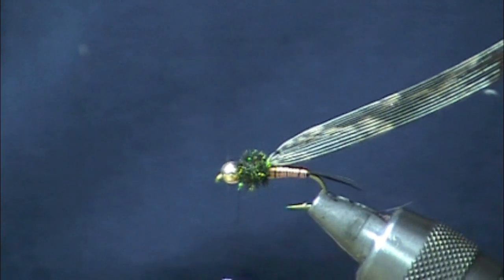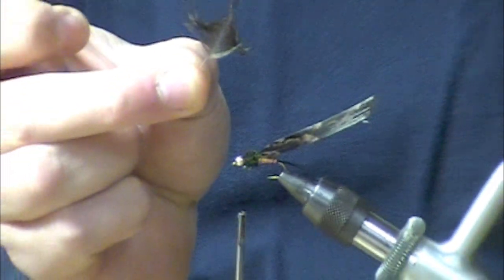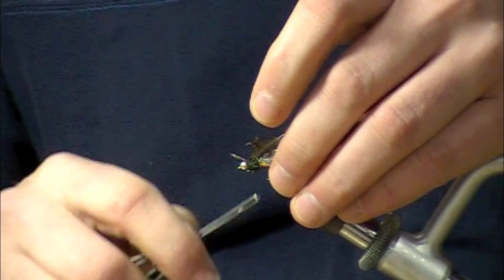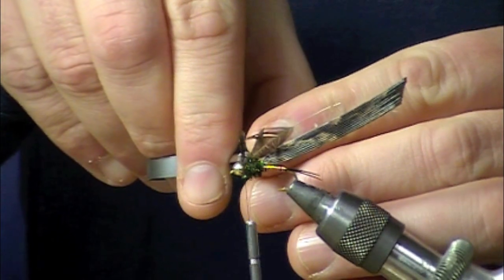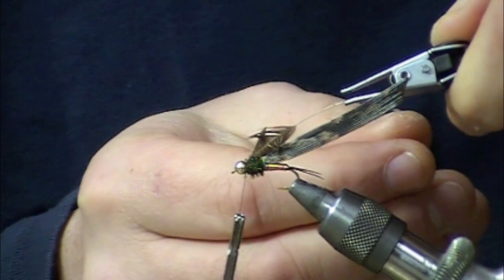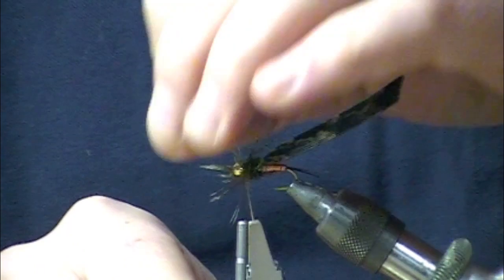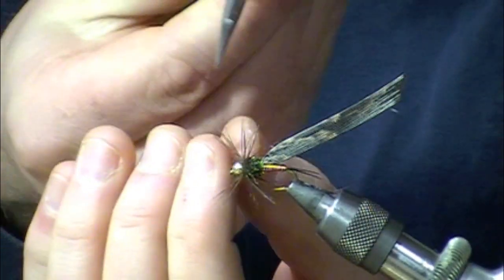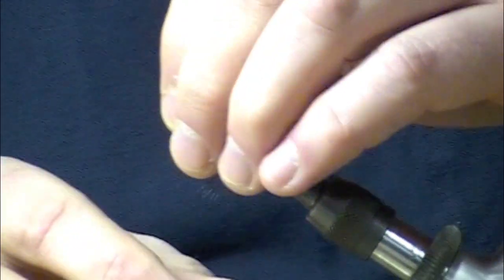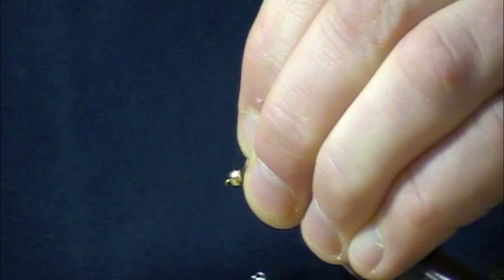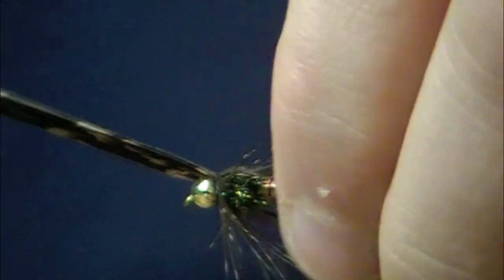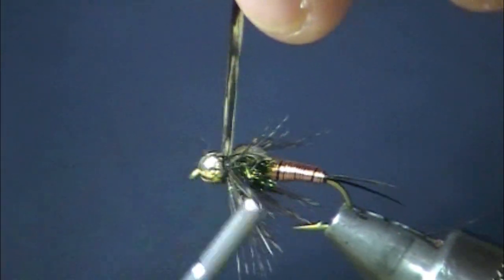I've got an India henback hackle here that I've prepped by pulling the downy feather off and then preparing it in a classic wet fly manner. Get a wrap or two of that. Clear the hackles out there just a teeny tiny bit. Pull our wing case over, expose that awesome mottled appearance there.